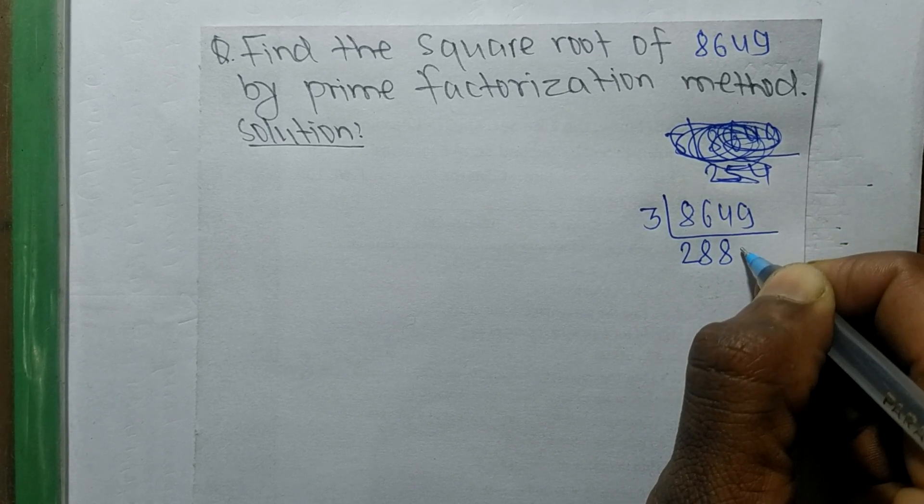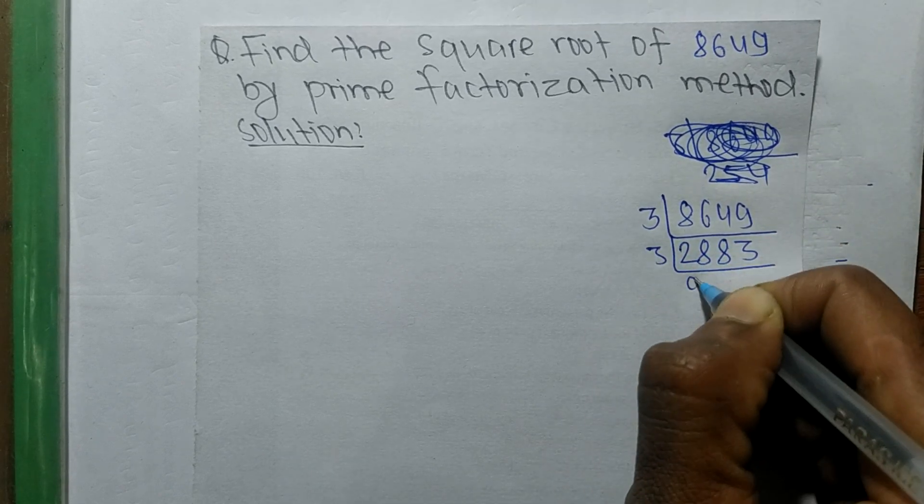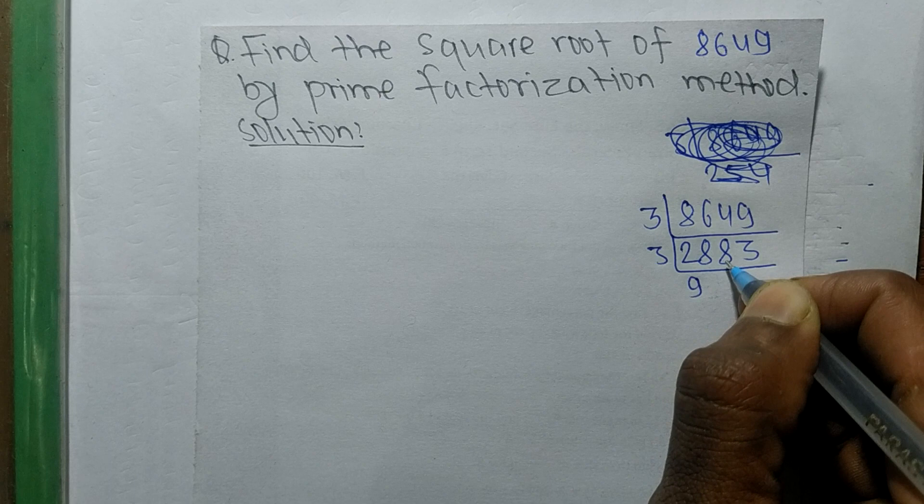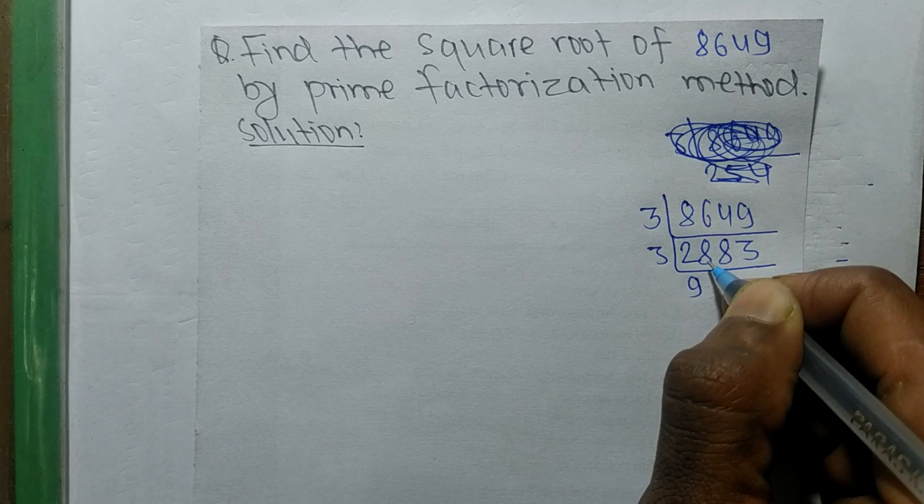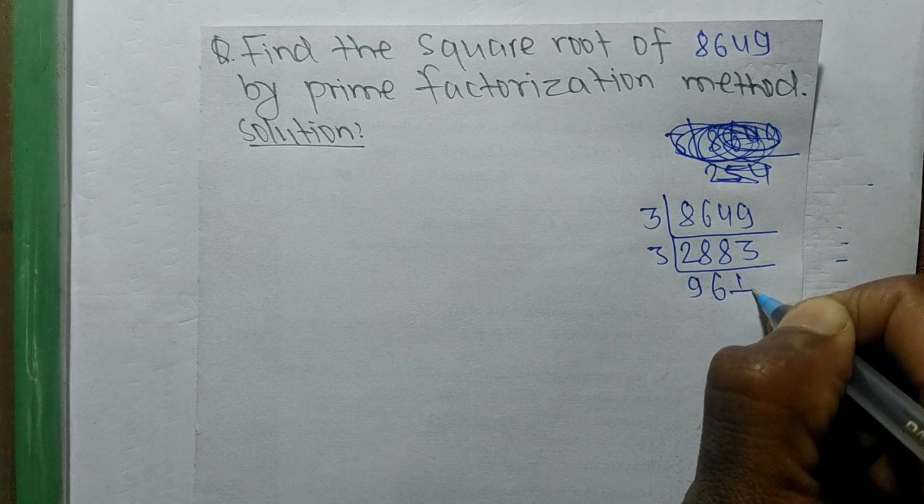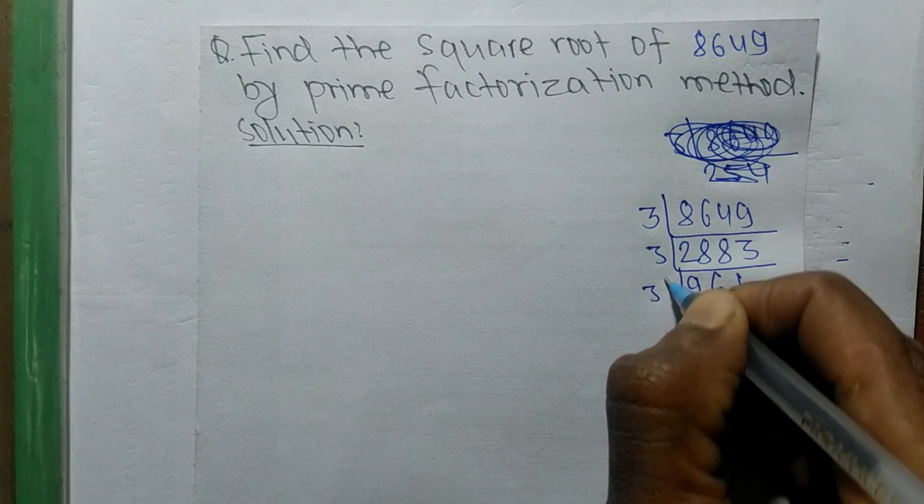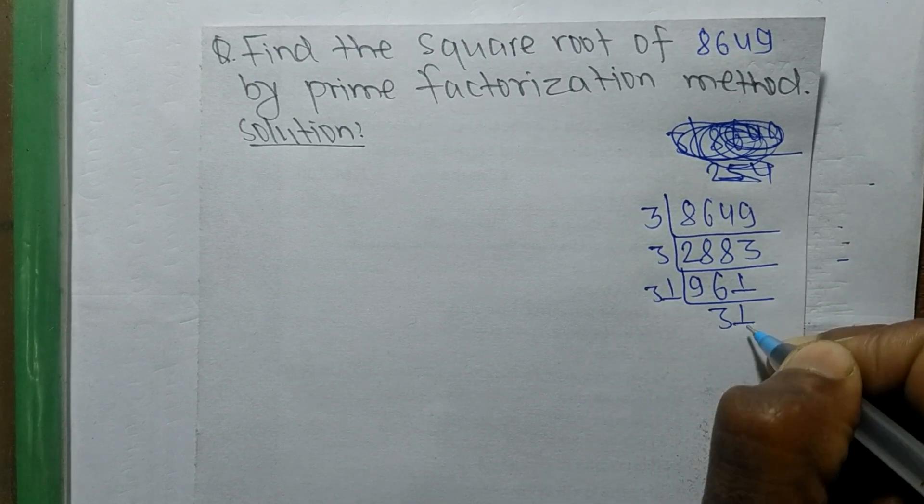24, 3 times 8, and 3 times 3, so it is 3 times 9 is 27. 1 remaining, 1, 8, 18. 3 times 6 means 18, and 3 times 1 means 3. So now it is 31 times 31, means it is 961.